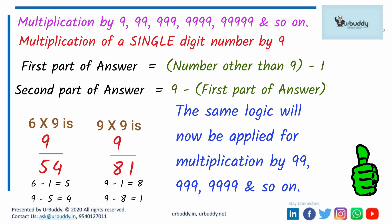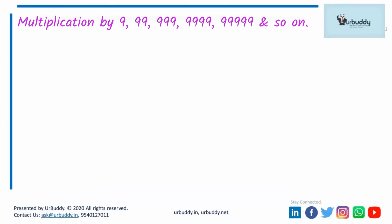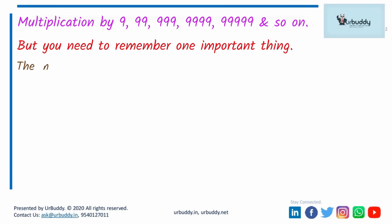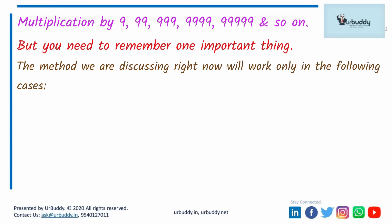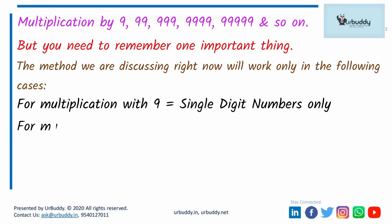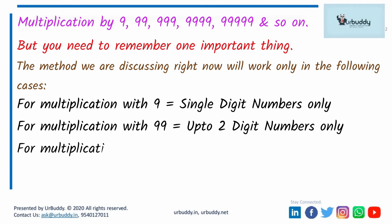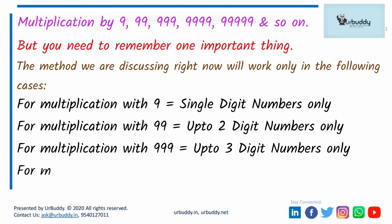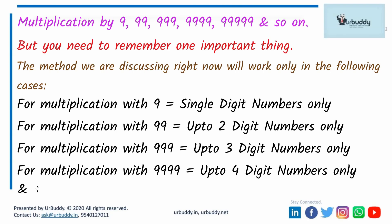The same logic will now be applied for multiplication by 99, 999, 9999, and so on. One important limitation to remember: only single-digit numbers can be multiplied with 9 using this method. Only numbers up to two digits can be multiplied with 99. Only numbers up to three digits can be multiplied with 999. Only numbers up to four digits can be multiplied with 9999, and so on. For example, you can't multiply 99 by 567 using this method, as 567 has three digits.